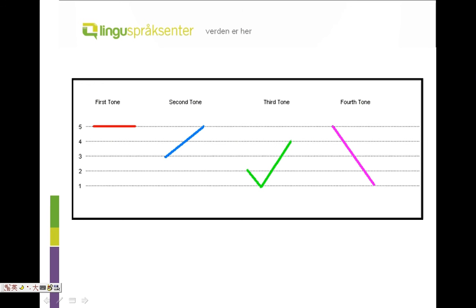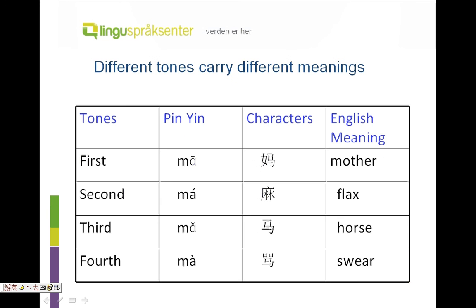Very good! We must pronounce the four tones very well, because different tones carry different meanings. For example: mā (first tone) means mother, má (second tone) means hemp, mǎ (third tone) means horse, and mà (fourth tone) means to swear.